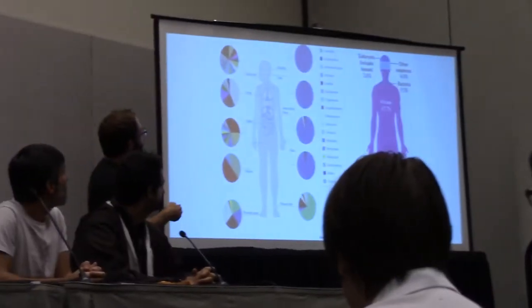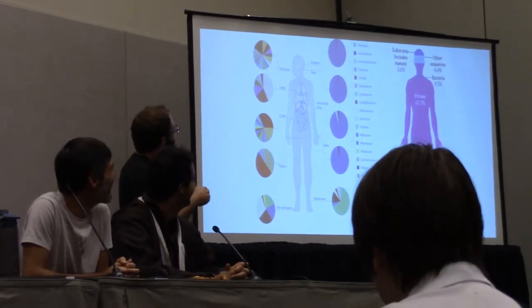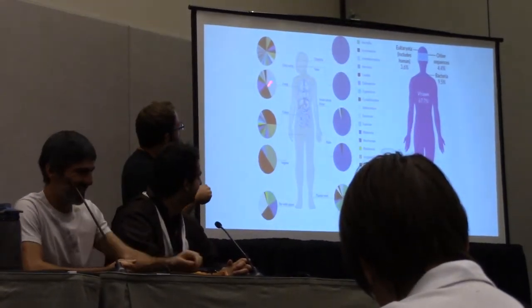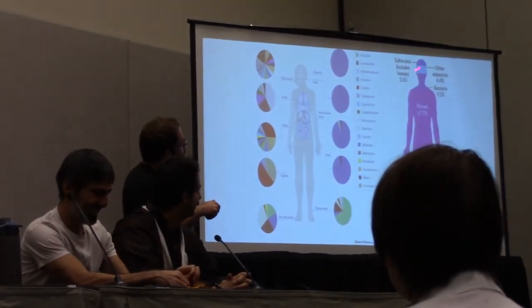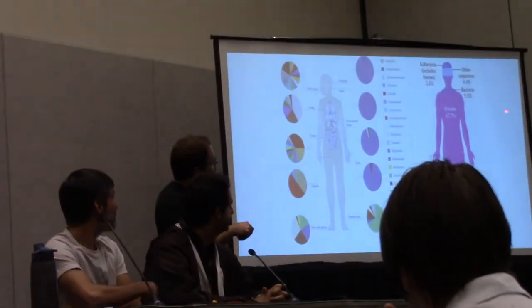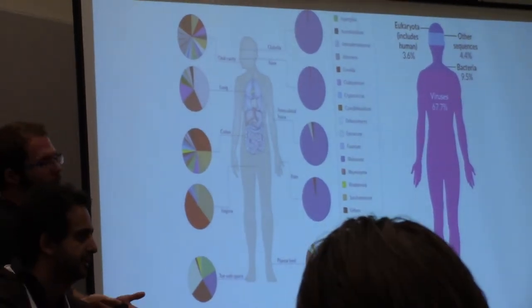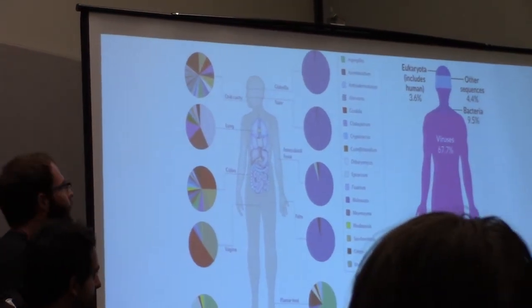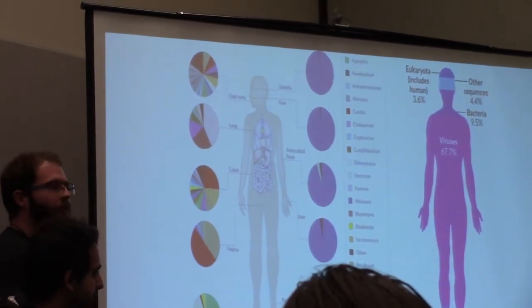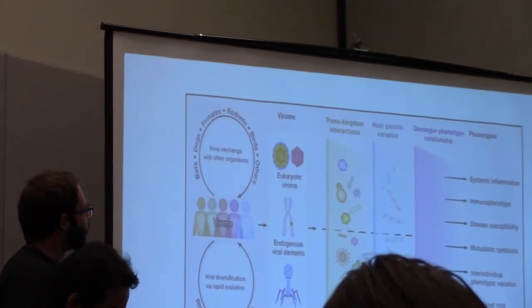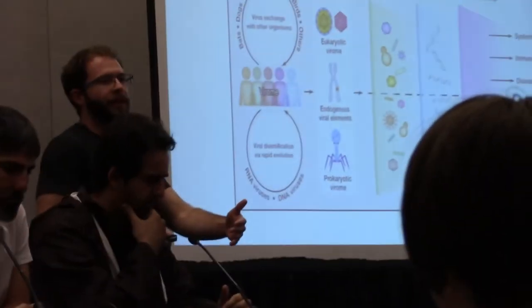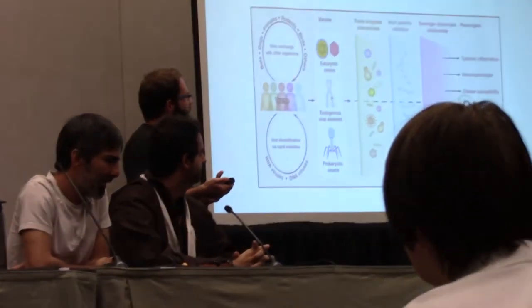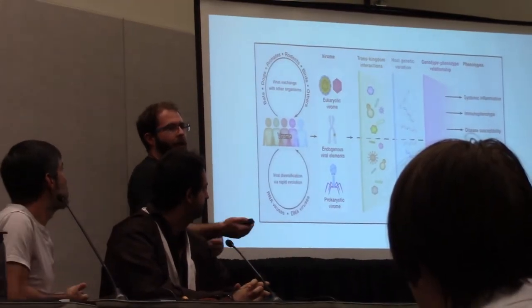Hi everybody, I'm Joe, and I'm here to tell you that even though we focus on the microbiome right now, there's a new field coming up — the virome. Here's a breakdown of the different kinds of bacteria found in different areas of your body, and up here you have your human sequence, your bacterial sequence, and your viral sequence. We are made up of almost 70% viral genes in our body, compared to that 1-in-1,000 microbial-to-human ratio. So we're made up of more virus than anything else, and we've sort of ignored it until the past couple of years.